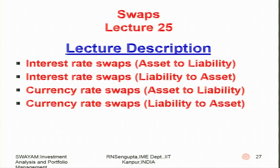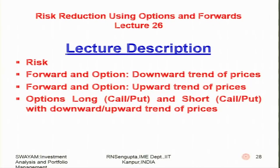Under lecture 25, we will consider swaps — both interest and currency — and how to change an asset to a liability and vice versa depending on your position. Lecture 26 covers risk reduction methodologies using options and forwards. We revisit the definition of risk (not just standard deviation). Forwards and options with downward and upward trends, call and put, short call and put, can be combined to reduce overall risk.